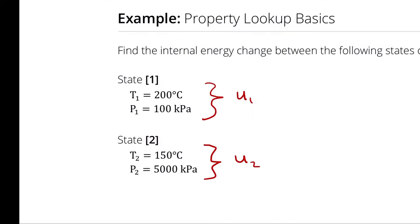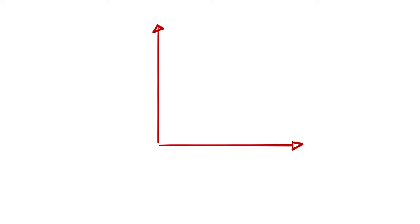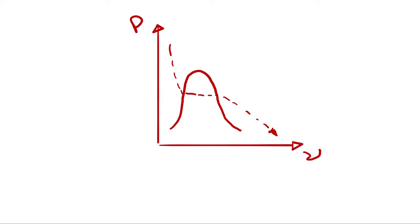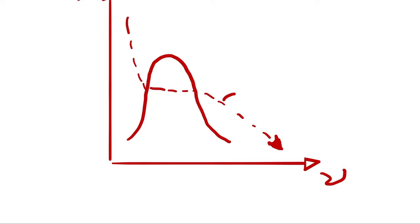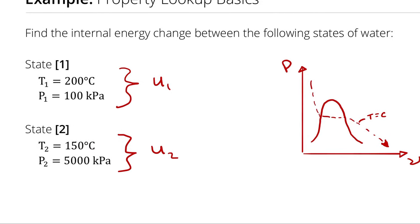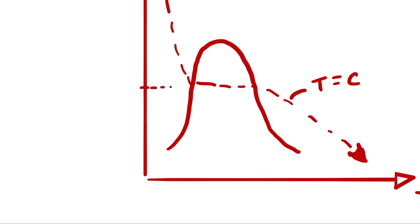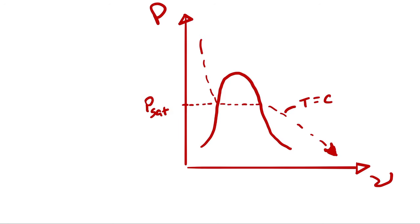For that, we are going to turn to our PV and TV diagrams. On a PV diagram, the saturation lines form a dome shape, and a line of constant temperature goes down and to the right. This line of constant temperature is arbitrary — it could refer to any temperature, like 200 degrees Celsius. The horizontal region going across the dome is the saturation pressure corresponding to that temperature, and we can look up that pressure in our saturation tables.